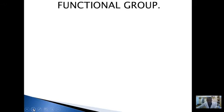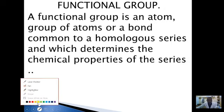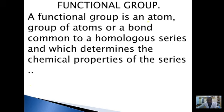Now we want to look at what we call a functional group. A functional group is an atom or group of atoms, or a bond common to a homologous series, which determines the chemical properties of that series. For example, if we look at the homologous series of the alcohols, we must have an atom group attached — OH. This OH group is what we call the functional group of the alcohols.